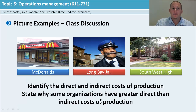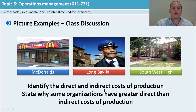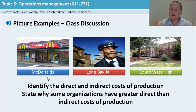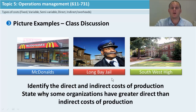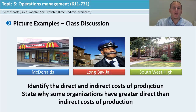Feel free to pause and see if you can identify why some direct costs might be greater than indirect costs. In McDonald's, direct costs for making a Big Mac would be the wrapper, buns, and the two all-beef patties, special sauce, lettuce, cheese, pickles, onion, and sesame seed bun. Indirect costs might be full-time employees and rent on the building. In Long Bay Jail, direct costs might be prisoners' uniforms and meals — the more prisoners, the more you pay. An indirect cost would be full-time staff who still need to be paid even if there are no prisoners.